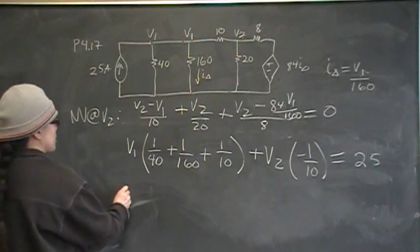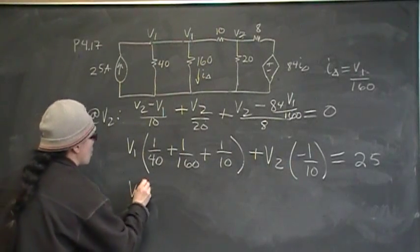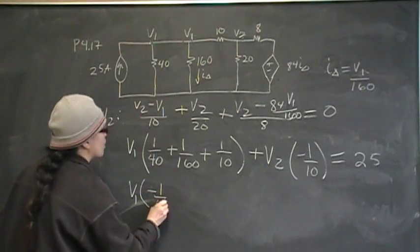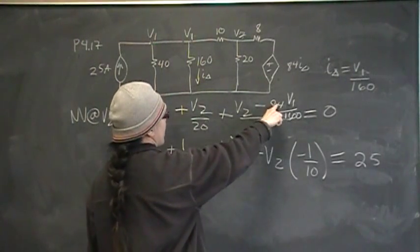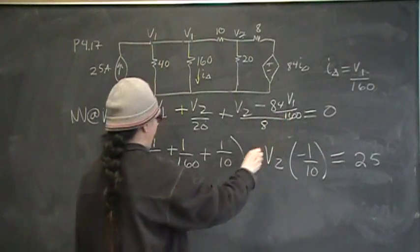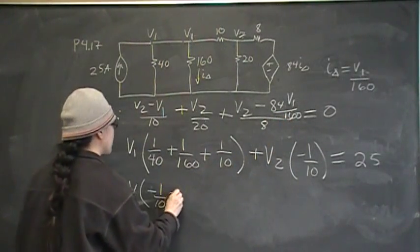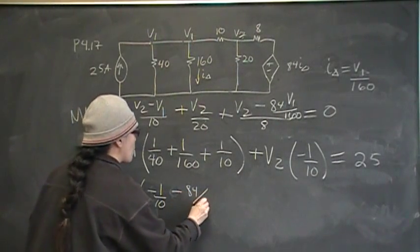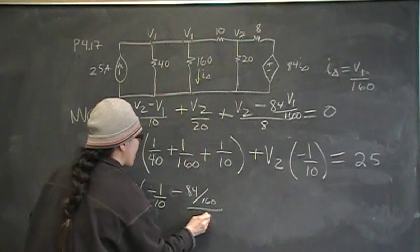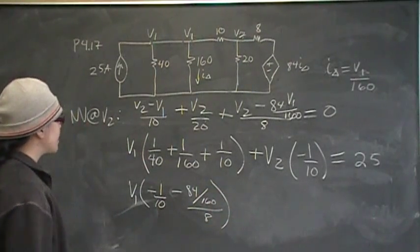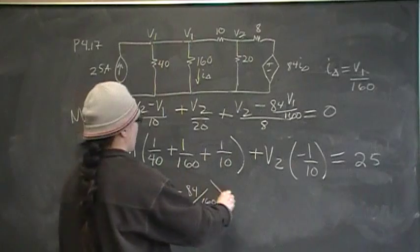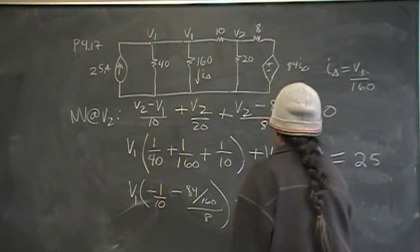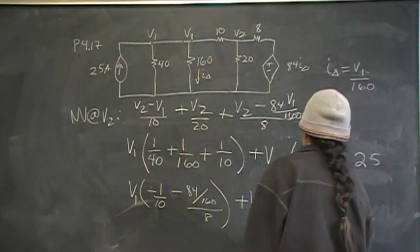So now I gather my coefficients in this one. So V1, this is equation 2, I have negative 1 over 10. And then I also have negative 84 over 160 over 8. And I'm going to let my calculator do the calculation for me. So minus 84 divided by 160 divided by 8. And that is everything for V1.